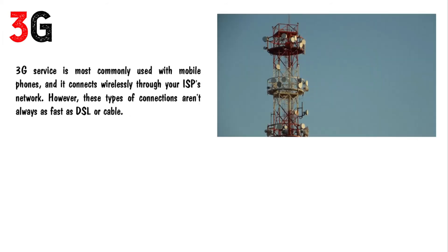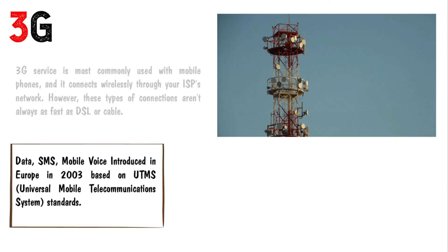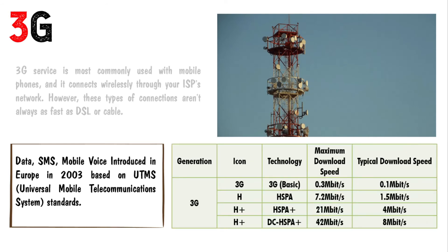3G service is the most commonly used with mobile phones and it connects wirelessly through your ISP's network. However, these types of connections are not always as fast as DSL or cable. 3G supports data, SMS, and mobile voice, and was introduced in Europe in 2003 based on UTMS — Universal Mobile Telecommunication System — standards. The maximum download speed of 3G is 42 Mbps while the typical download speed is 8 Mbps.